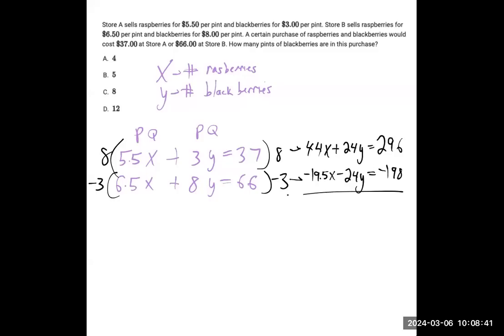Now we can add down in all the columns. 296 minus 198 gives you positive 98. In the X column, 44 minus 19.5 gives you 24.5X. And the Ys cancel because we have opposites.